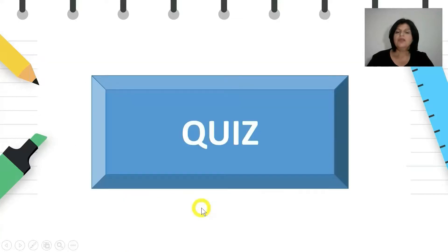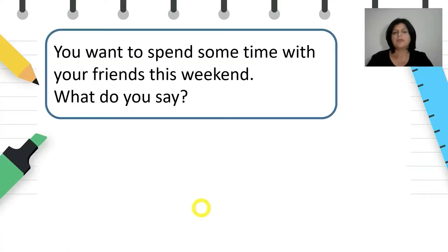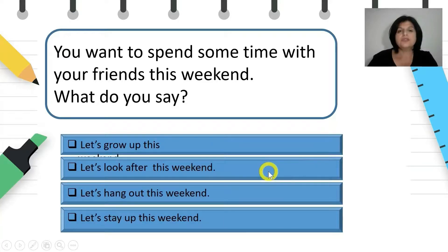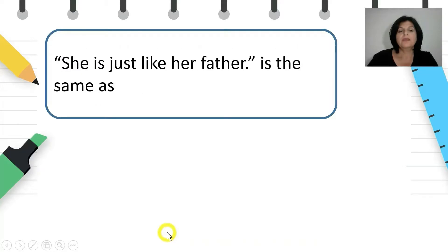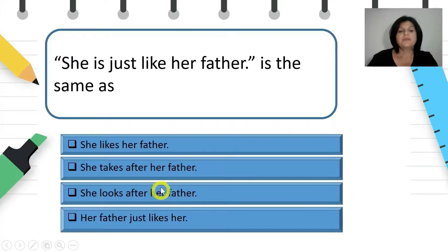Now let's do a quiz. You want to spend some time with your friends this weekend — what do you say? Look through these suggestions and find the correct one. You're right: 'Let's hang out this weekend.' She's just like her father — is the same as? You're right: 'She takes after her father.'